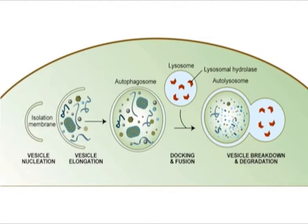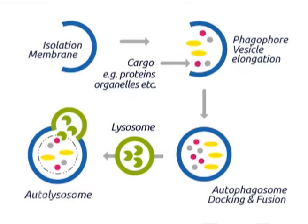Lysosomes are also responsible for autophagy, the gradual turnover of cell components. The first step of autophagy appears to be the enclosure of an organelle such as a mitochondrion in a membrane. The resulting vesicle, an autophagosome, then fuses with the lysosome and its contents are digested. Autophagy is responsible for the gradual turnover of cytoplasmic organelles.